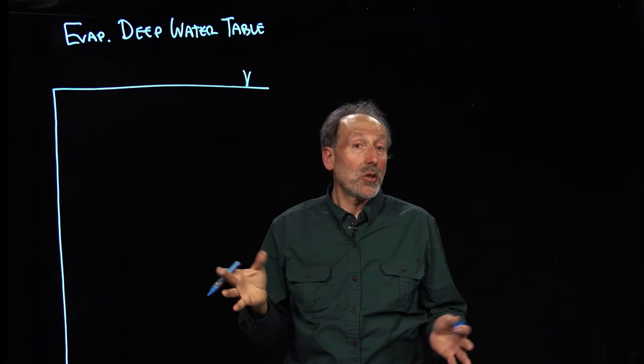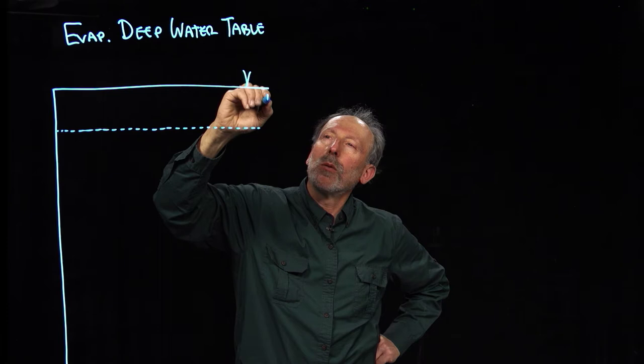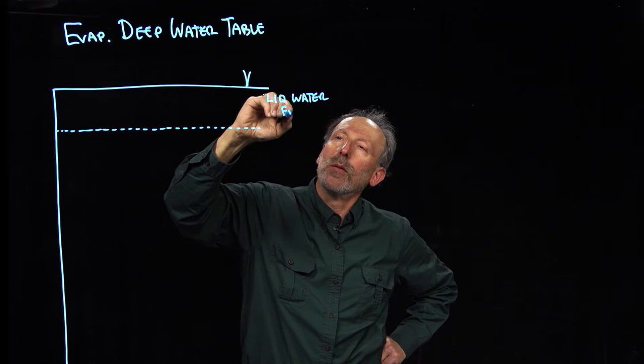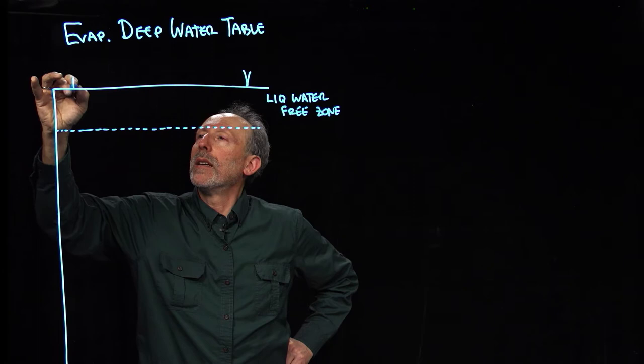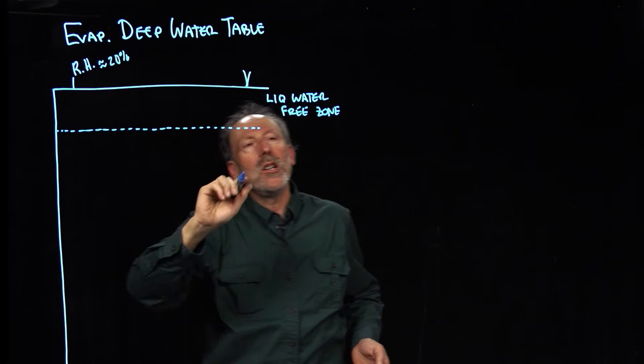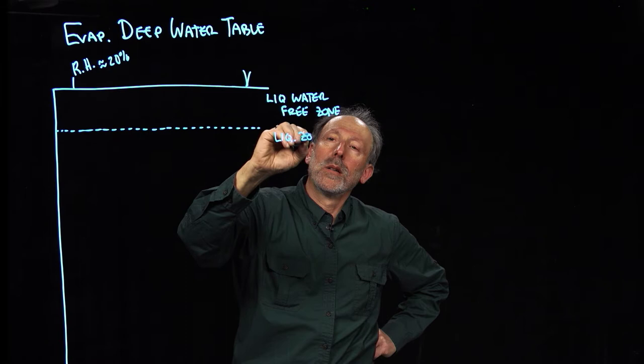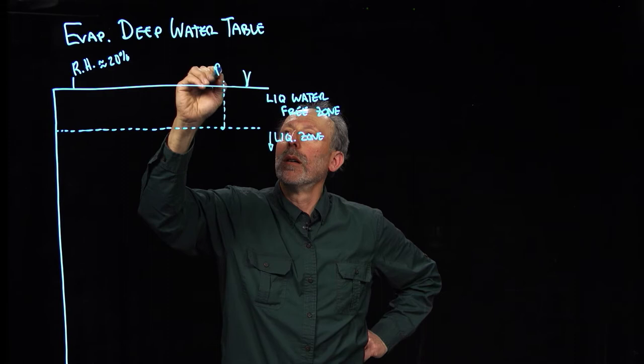And what we're gonna assume is this has been drying for quite some time. So there is some little depth here, which we will call the liquid water free zone. So this is completely dry. But the relative humidity of the air, it's a desert, could be say on the order of 20%. But we know in the liquid zone, which is below here, we know that the relative humidity here is about a hundred percent.